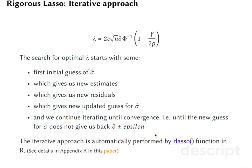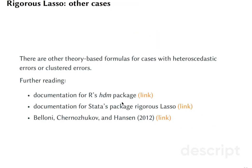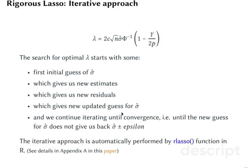All of this is done under the hood automatically with our Lasso function from the HDM package, which you worked with already. There are other theory-based formulas for cases with heteroscedastic errors or clustered errors. So this one is for homoscedasticity, but if you have heteroscedasticity or you have clustered errors, this formula slightly changes.